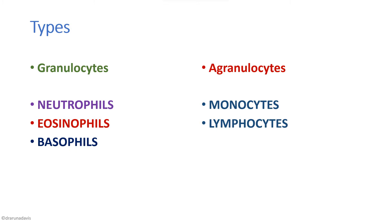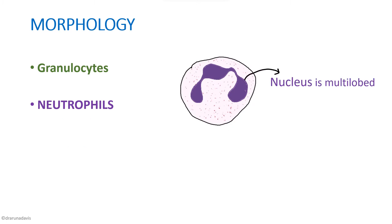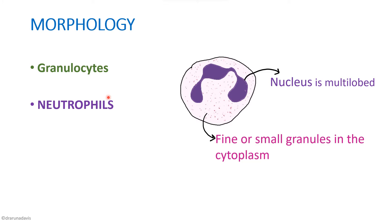The neutrophil has a multi-lobed nucleus connected by fine chromatin threads, and it has plenty of cytoplasm which contains fine pink granules. The normal size of neutrophils is around 10 to 14 micrometers, which means it is slightly bigger than our RBCs.